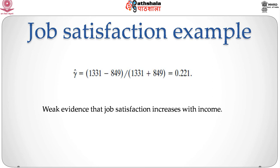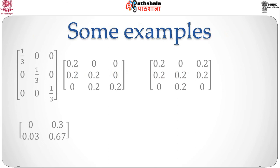For the job satisfaction example, the number of concordances is 1331 and the number of discordances is 849. The sample gamma is therefore (1331 − 849) / (1331 + 849), which equals 0.221. We can conclude that there is some weak evidence that job satisfaction increases with income. It would be instructive to calculate the gamma measure for the four probability distributions given on the slide, where you should be able to show that gamma equals 1 for the first two examples, 0 for the third, and minus 1 for the fourth.